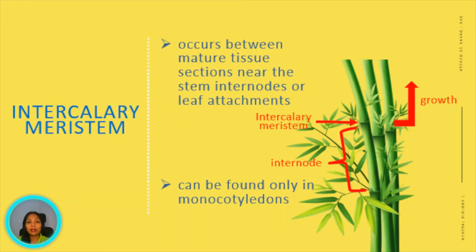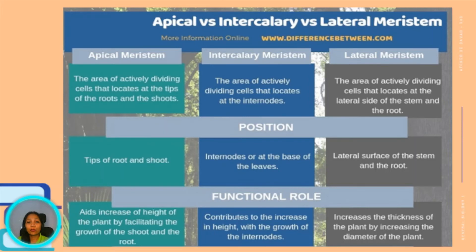Intercalary meristem occurs between mature tissue sections near the stem internodes or leaf attachments. Intercalary meristem can only be found in monocots, like grasses. Grasses have intercalary meristem, which allows the leaves to grow back after mowing. Intercalary meristem facilitates the growth of leaves and branches. Here is a table showing the differences of apical, intercalary, and lateral meristem.